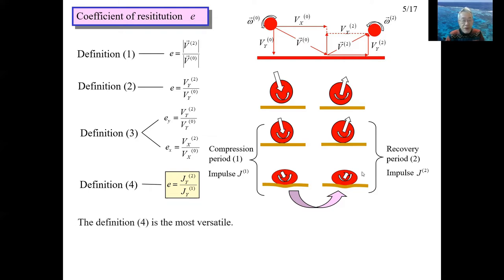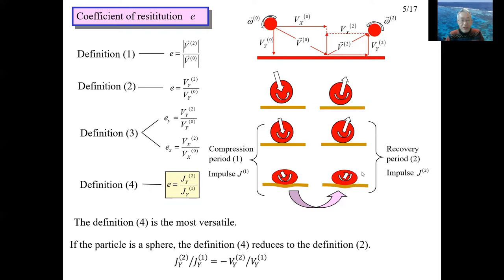Definition 4 defines the restitution coefficient as the ratio of the impulse of the compression period to the recovery period. Definition 4 is the most rational. If the particle is a sphere, Definition 4 reduces to Definition 2. In this lecture, Definition 4 is adopted.